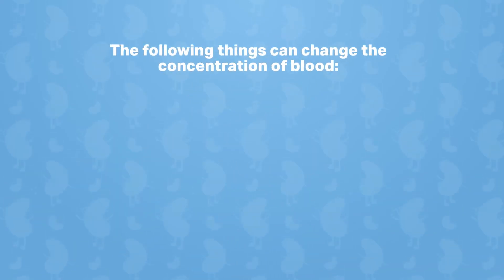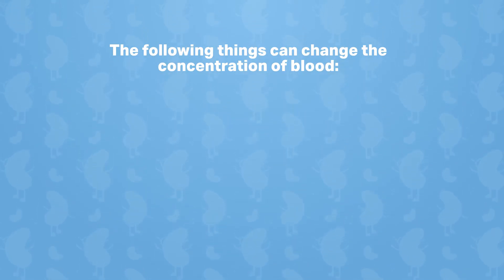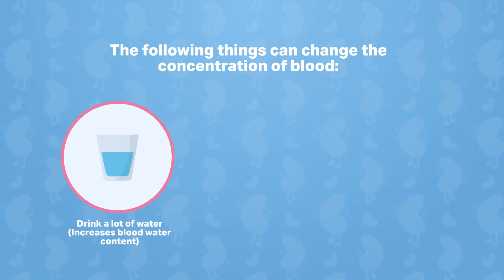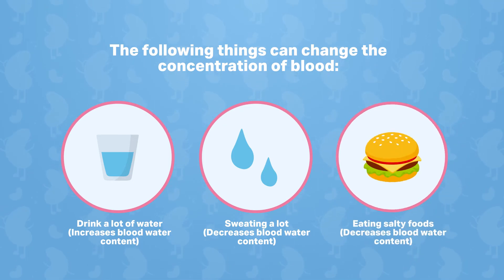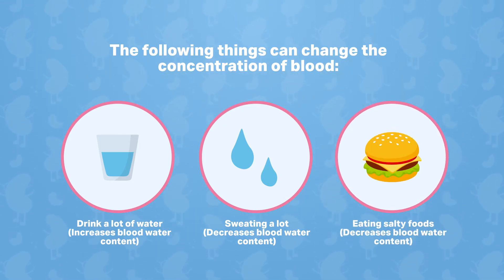The following things can change the concentration of the blood: drinking lots of water, which increases blood water content; sweating a lot, which reduces blood water content; and eating salty foods, which also reduces blood water content.